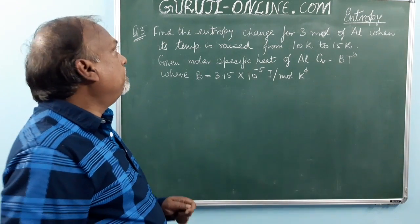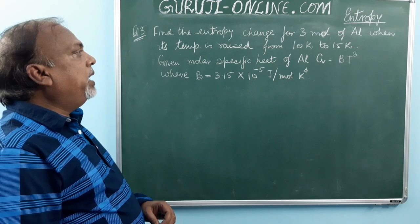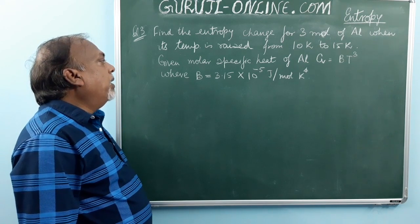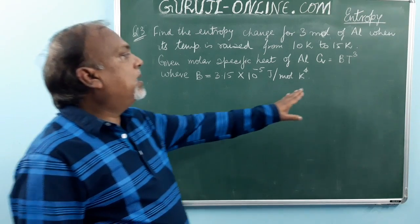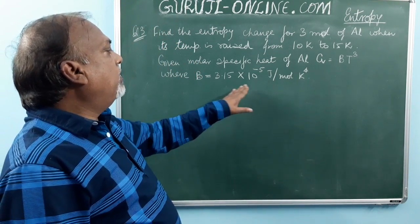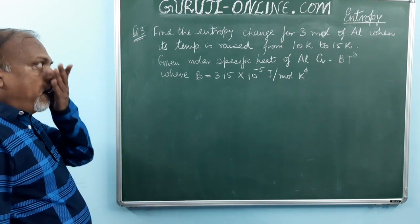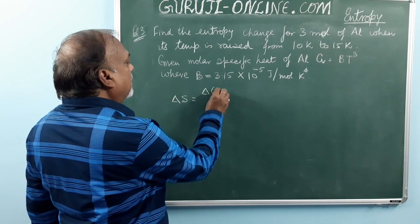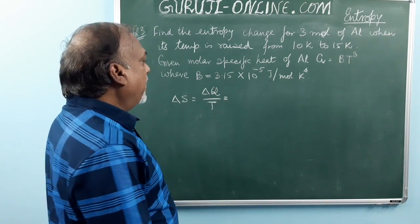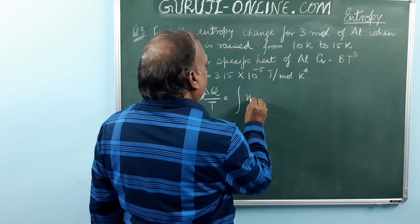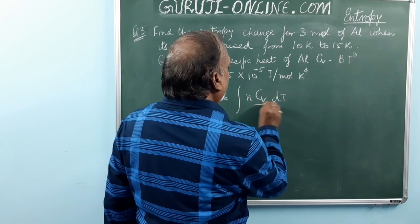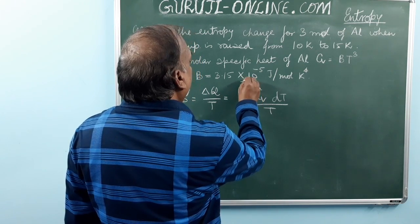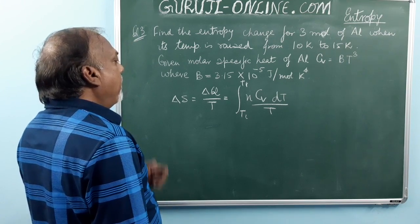This is the third question. Find the entropy change for 3 moles of Aluminium when its temperature is raised from 10 Kelvin to 15 Kelvin. The molar specific heat is given by C = B T³, where B is a given constant. Delta S equals the integral from Ti to Tf of N Cv dT upon T.